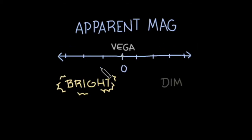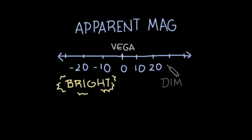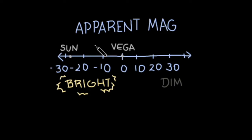The Sun, which is brighter than almost anything we see because it's the most luminous thing that's nearby, has an apparent magnitude of negative 26.7. Sirius, another star, has an apparent magnitude of negative 1.4. The Moon has an apparent magnitude of negative 12.6. Those are just some objects for scale.